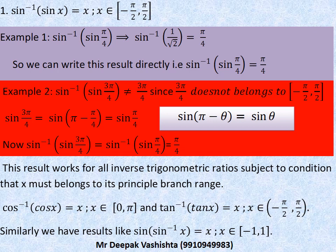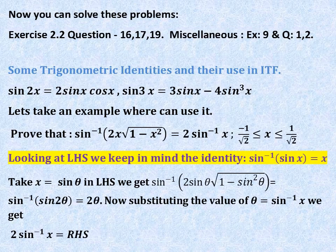The same result is valid for other inverse trigonometric ratios, subject to the condition that x must belong to the principal branch range. We have cos inverse cos x equals x when x lies in 0 to pi, and tan inverse of tan x equals x when x belongs to minus pi by 2 to pi by 2. Similarly, sin of sin inverse x equals x when x belongs to minus 1 to 1. With these identities you can solve question numbers 16, 17, and 19 of exercise 2.2 and questions 1 and 2 of the miscellaneous exercise.